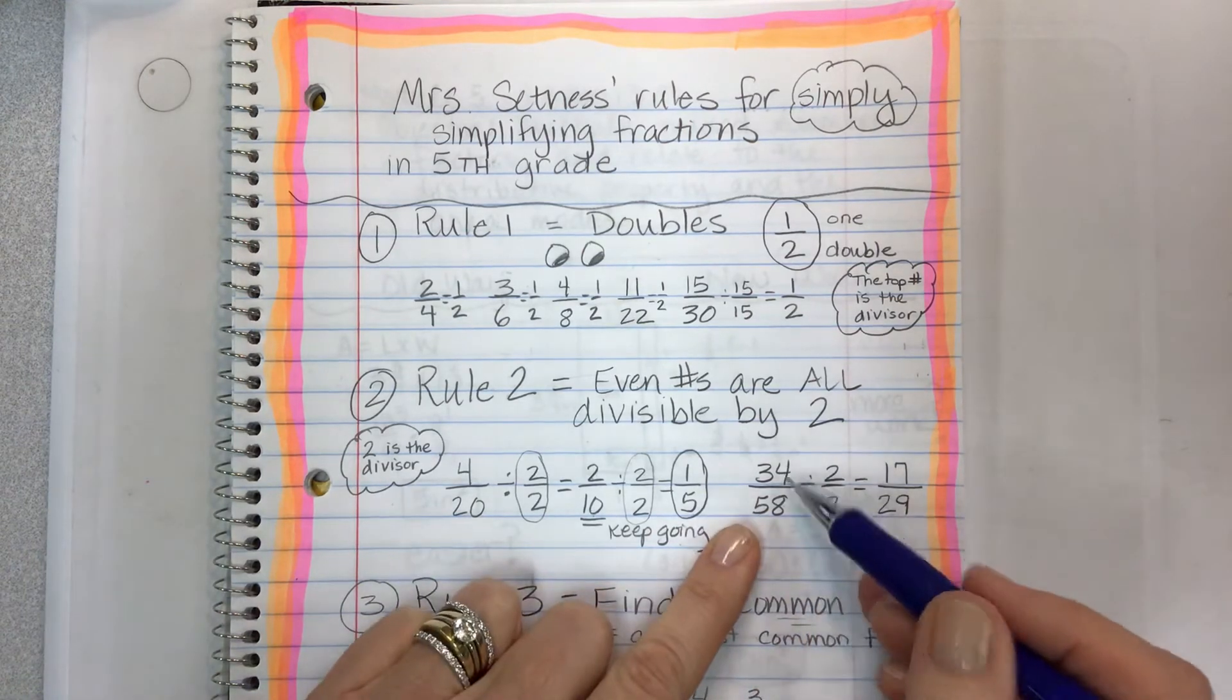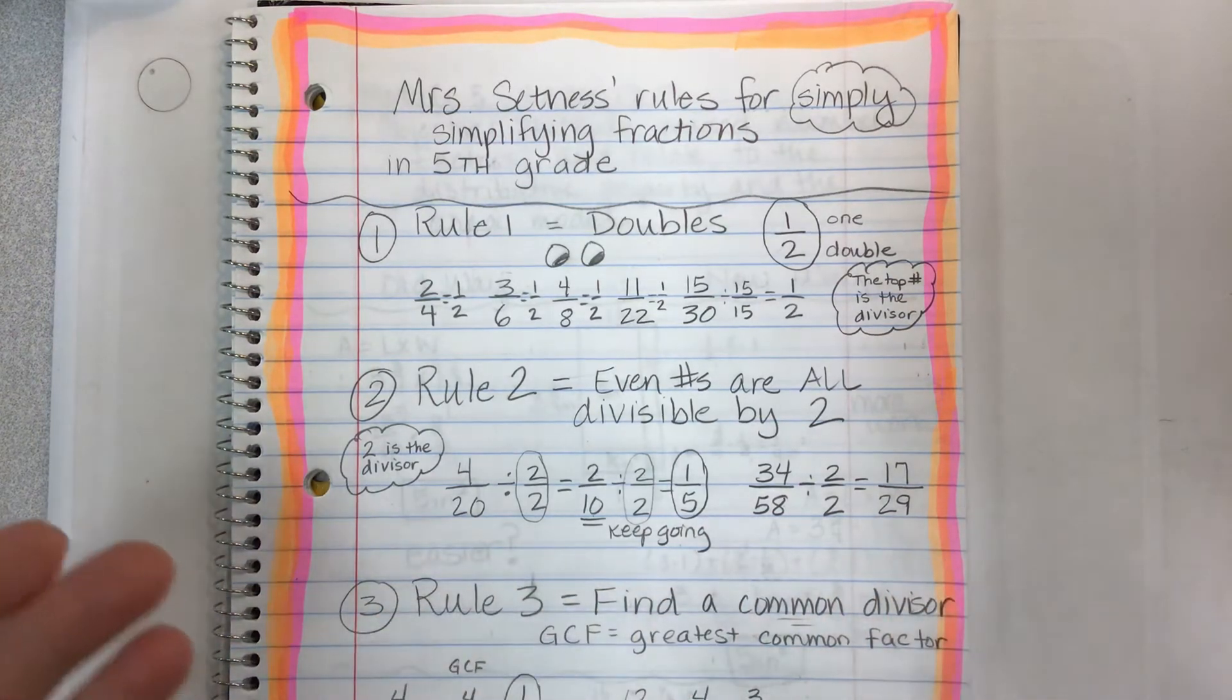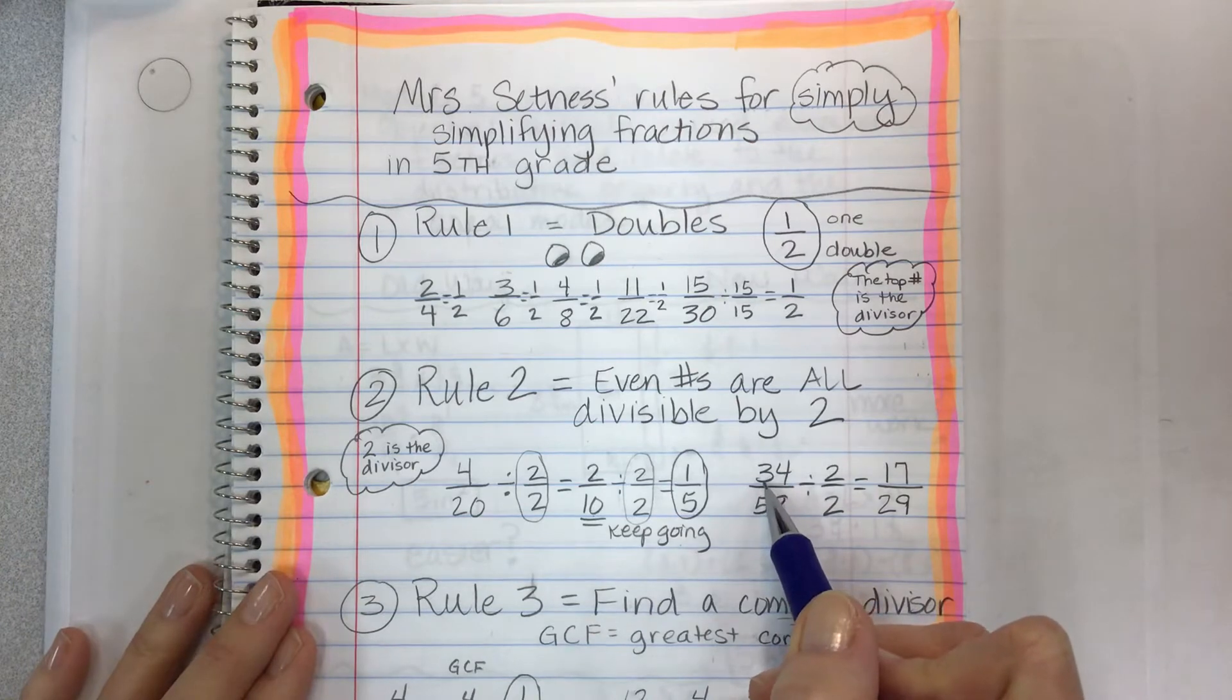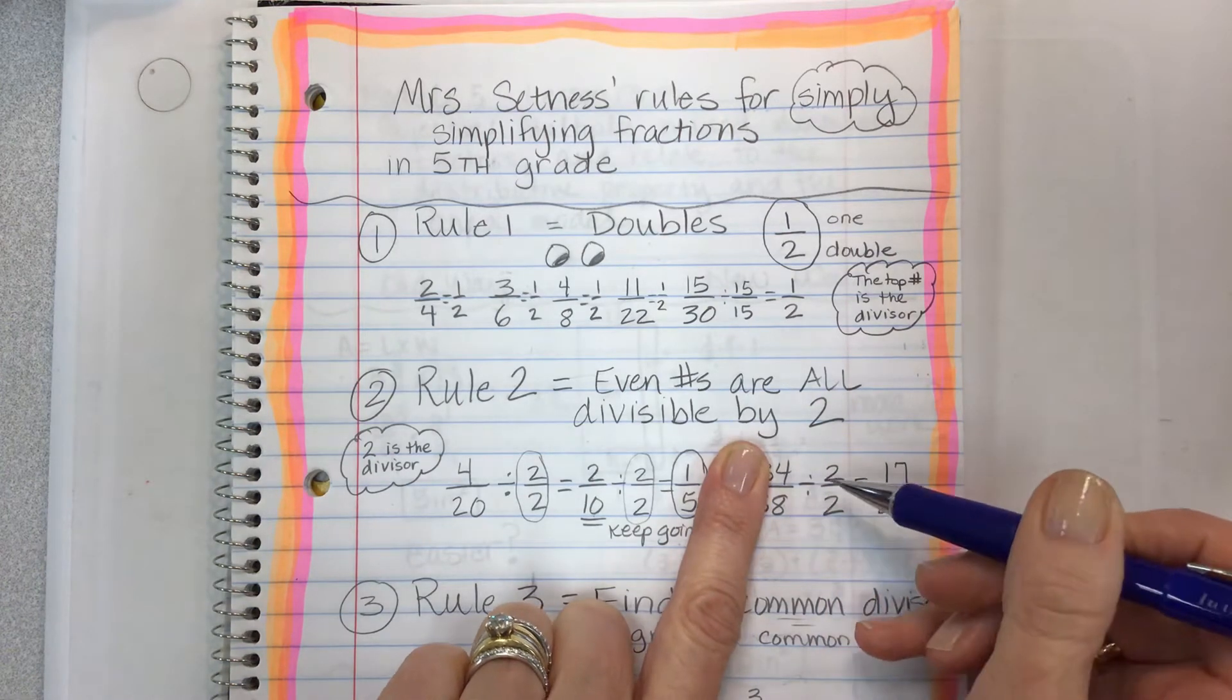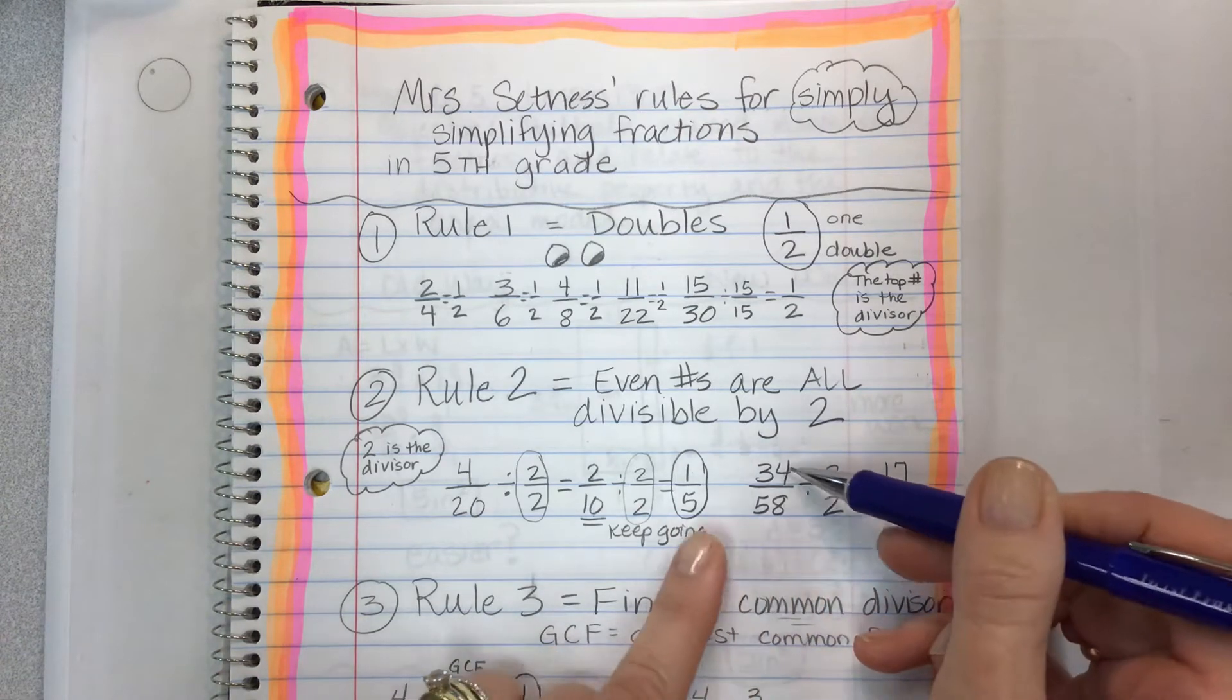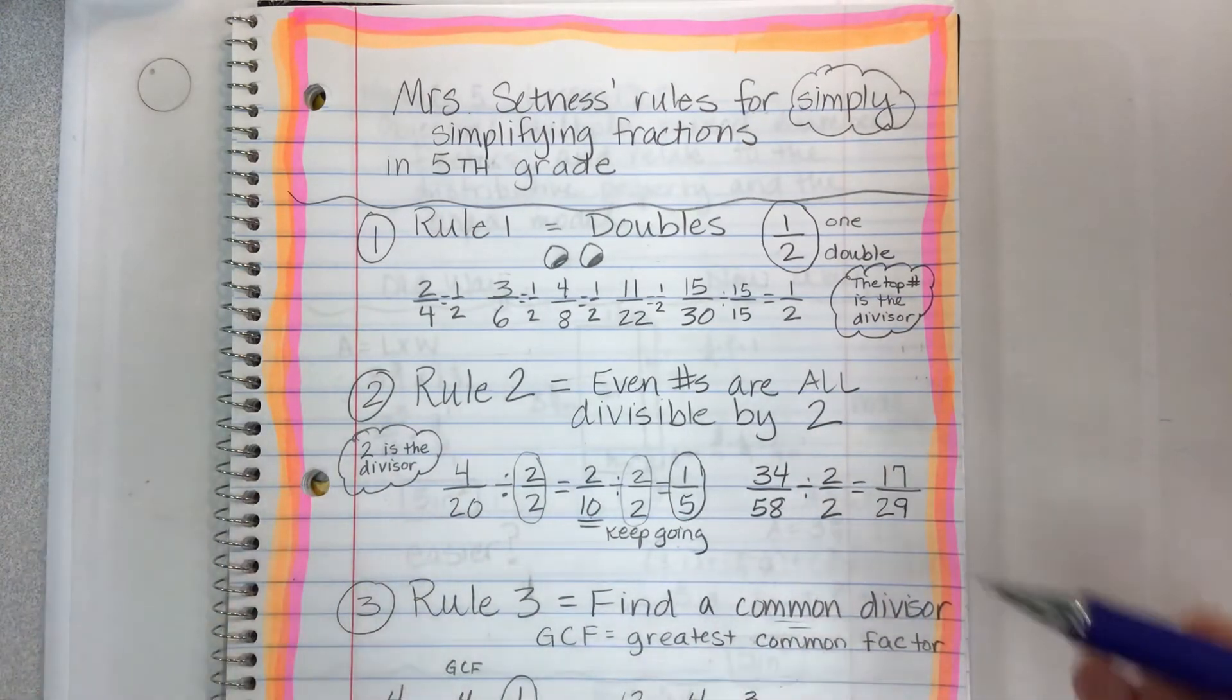But sometimes you'll have really big numbers and you don't really know any factors that would go into these because you're still only in the primary grades. So if I have something like 34 58ths, what you really want to look for are the last digits. Four and eight are both even. So just start simplifying by dividing by two and maybe you'll get a lower number that you can see a factor and divide with. That'll come in rule three.